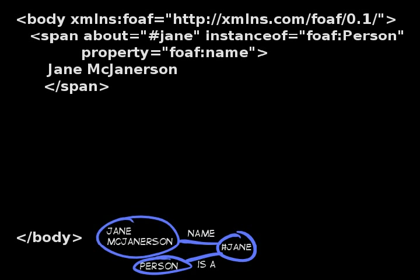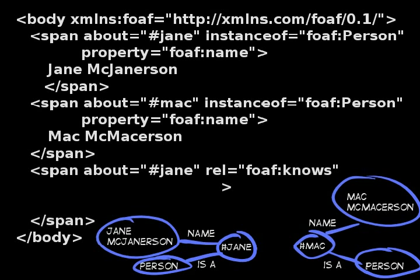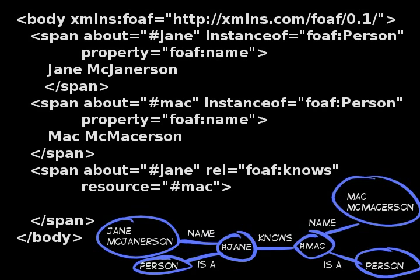Let's go one step further and create a relationship by stating that Jane knows someone else on the page named Mac. To do this, we set up another person on the page named Mac in the same way that we set up Jane. Now all that is left is to link them together. To do this, we use a combination of the rel attribute and the resource attribute. There is a vocabulary term that FOAF defines called knows. To state that one resource knows another resource, we can use foaf:knows as the predicate and link the resources using rel. We use resource as the target object for the rel. Mac could just as easily have been mentioned on another website, and the remote website URL could have been used instead of the local URL.